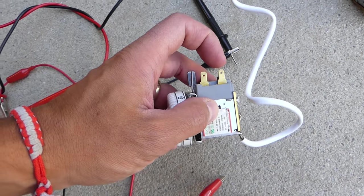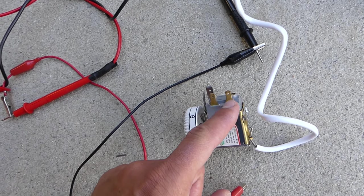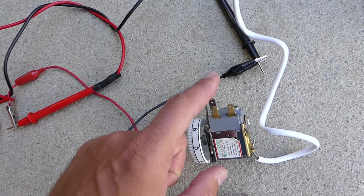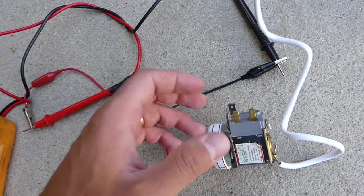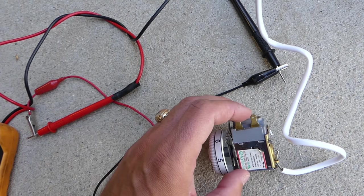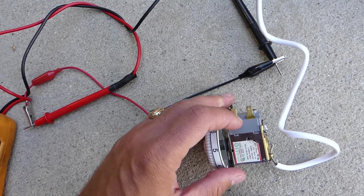Now what happens when the thermostat turns on: it's going to make a connection between this and this wire and the electricity will go to the compressor. Now if the thermostat closes, what happens when the fridge gets too cold and it turns off so it doesn't work and burn electricity, it's going to break the connection between these two.